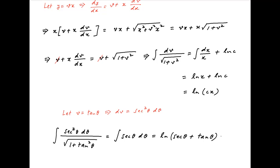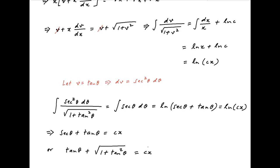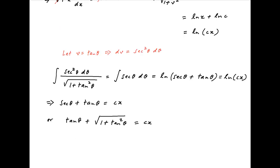This is equal to the right hand side, ln(cx). Therefore sec(θ) + tan(θ) = cx. The left hand side can be written as tan(θ) + √(1 + tan²(θ)) = cx. Replacing tan(θ) with v, the solution becomes v + √(1 + v²) = cx.